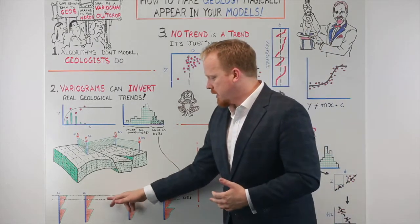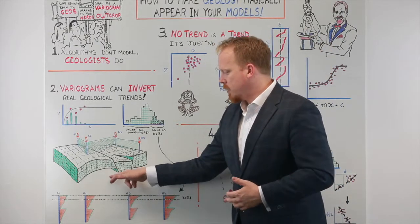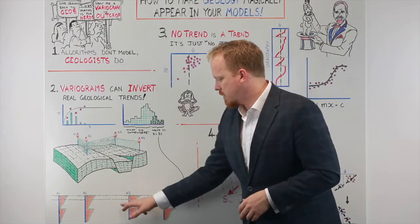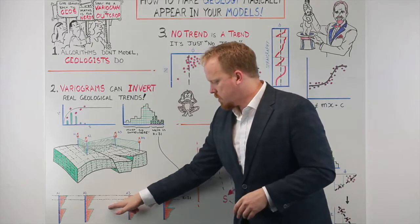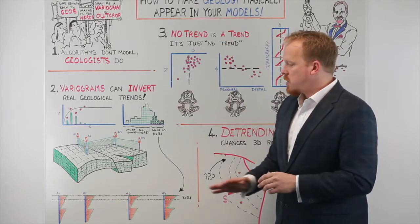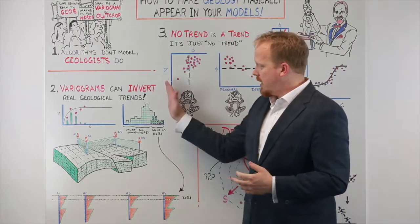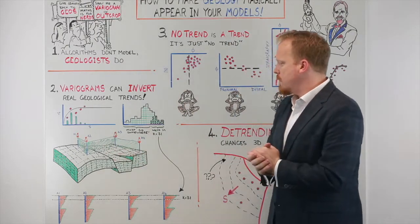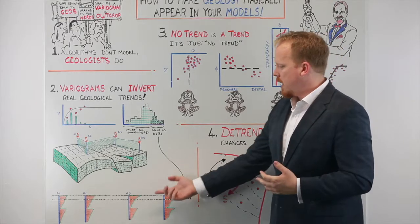And that in this particular case would result in a low value between these wells at that K layer and vice versa at the bottom of the coarsening upward sequences, you might start to observe high values at that location. So importantly, we can end up inverting that real geological trend if we just let the variogram be the only way of distributing that sequence.